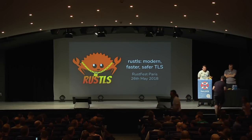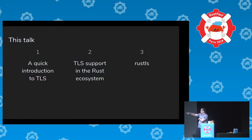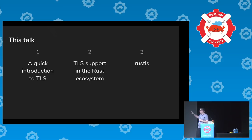If you want to know about crypto stuff, listen to Joe — he knows Rust TLS for securing access. This talk is in three parts: first, what TLS is and does; second, what crates are available in Rust for TLS; and third, the speaker's own library called Rustls — or Rust TLS — admittedly a name he regrets.